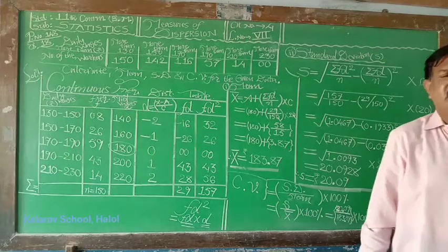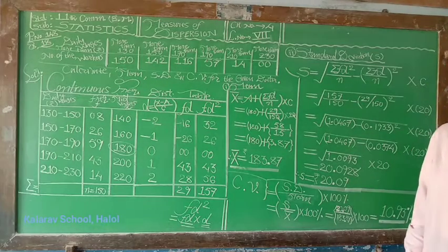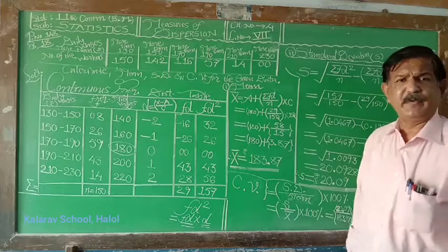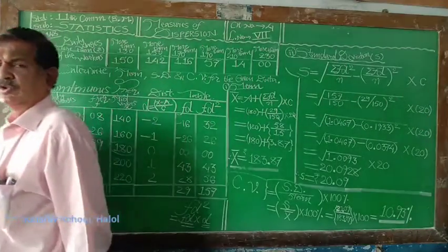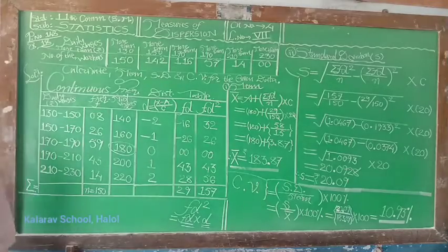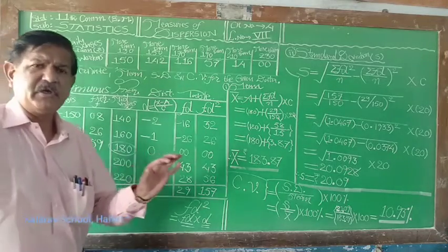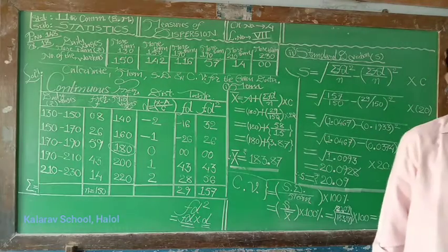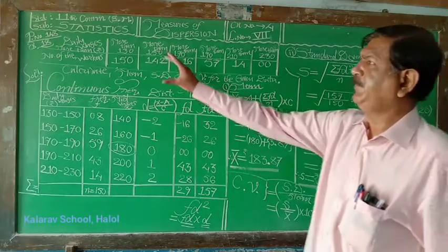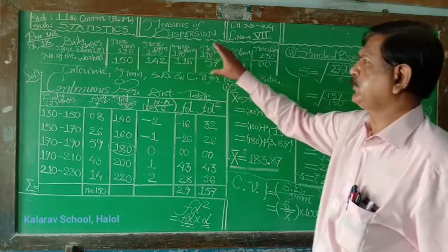Last time we studied mean, standard deviation, and coefficient of variation for ungrouped data and for the discrete type of frequency distribution. Today we are going to see the same thing for the continuous type frequency distribution. But in this example, more than type cumulative frequency distribution is given.